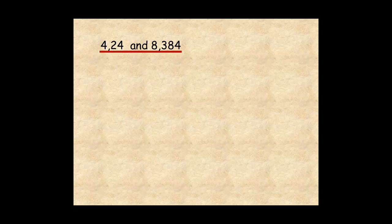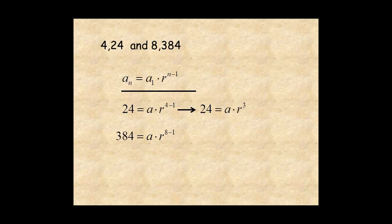Using the general formula for a geometric sequence, substitute the given information. Then simplify the exponents and you have 24 equals a times r to the power of 3 and 384 equals a times r to the power of 7.